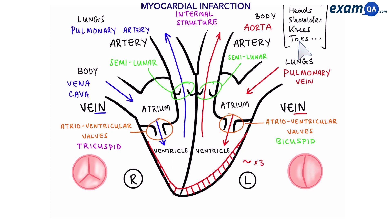The word 'pulmonary' refers to lungs. So we can see that the pulmonary artery takes blood to the lungs, and the pulmonary vein brings blood in from the lungs.